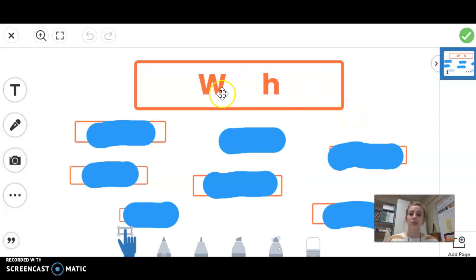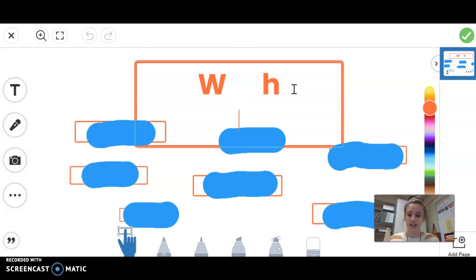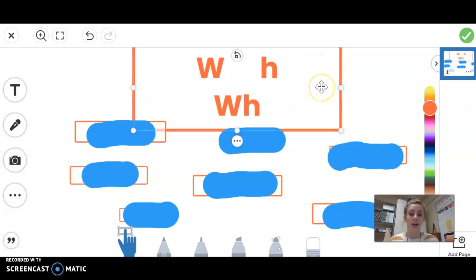So we know separately that W says wuh and H says huh. So go ahead and make those sounds on your own. You can pause the video or you can say it with me. We have W and H. But when we put it together, and let me just type it together, our sound becomes wuh. And that is because when we combine our two letters, the H goes silent.